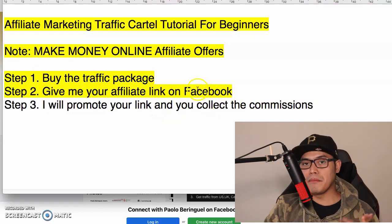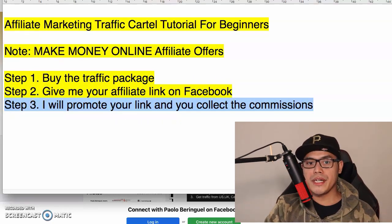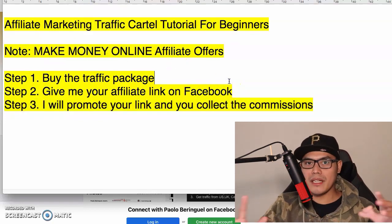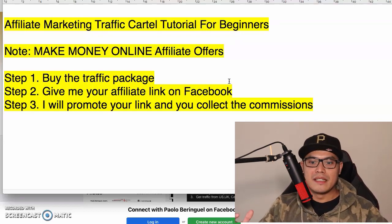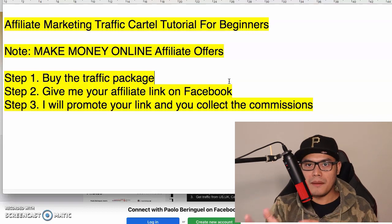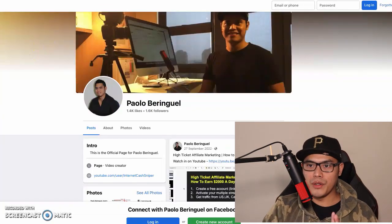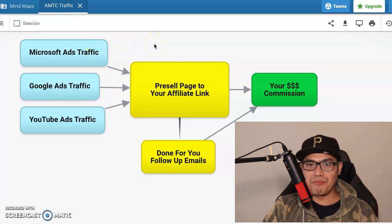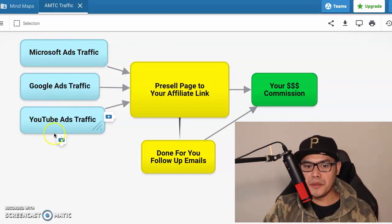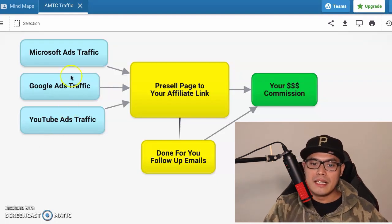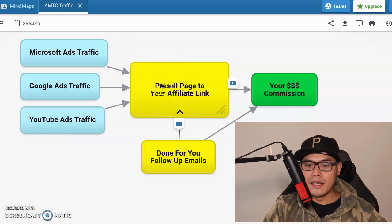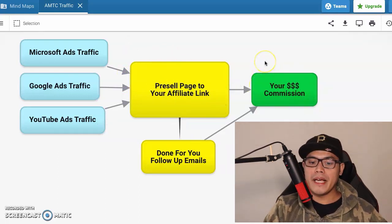Once you complete the purchase, give me your affiliate link. Step three is I will promote your link and you collect the commission. It's really straightforward — anyone can do this, even complete beginners with no previous experience. Buy the traffic package, give me your affiliate link, and I will be the one promoting your link. The traffic will be coming from my existing campaigns on Microsoft Ads, Google Ads, and YouTube Ads. When people buy, that's when you make the commission.